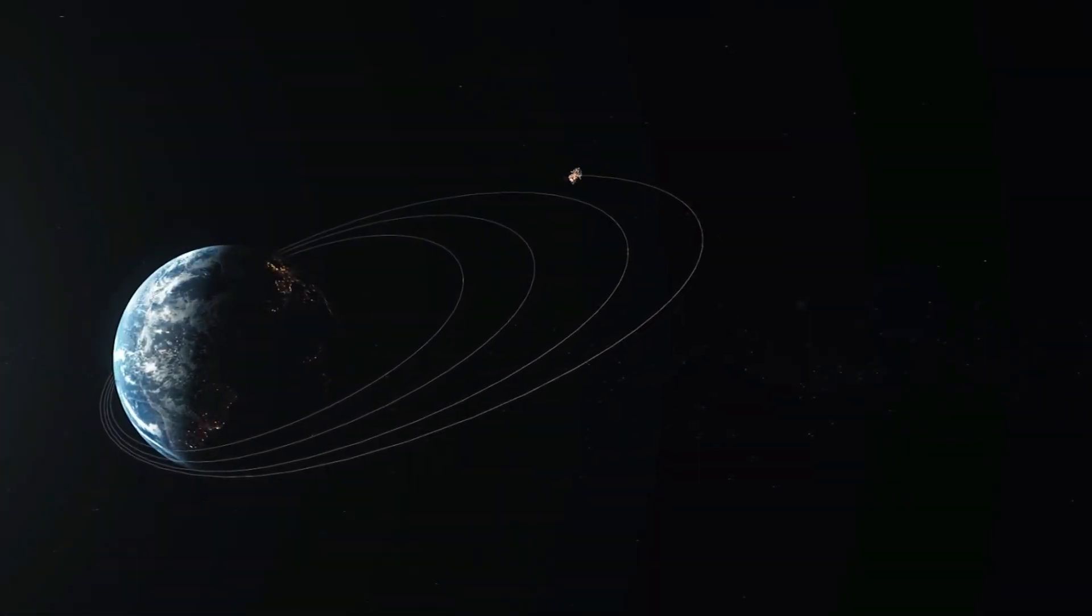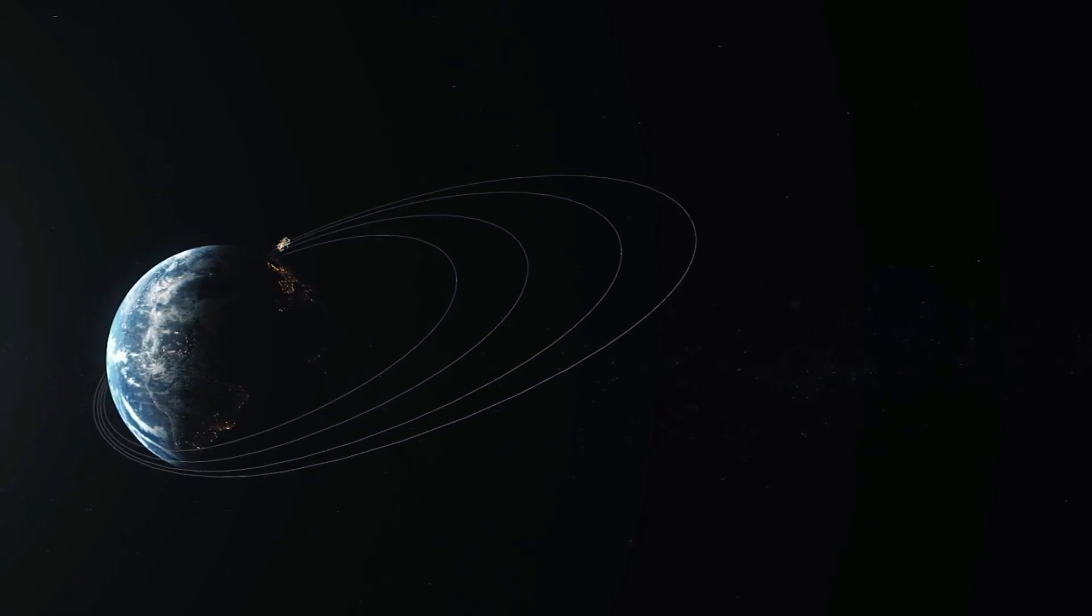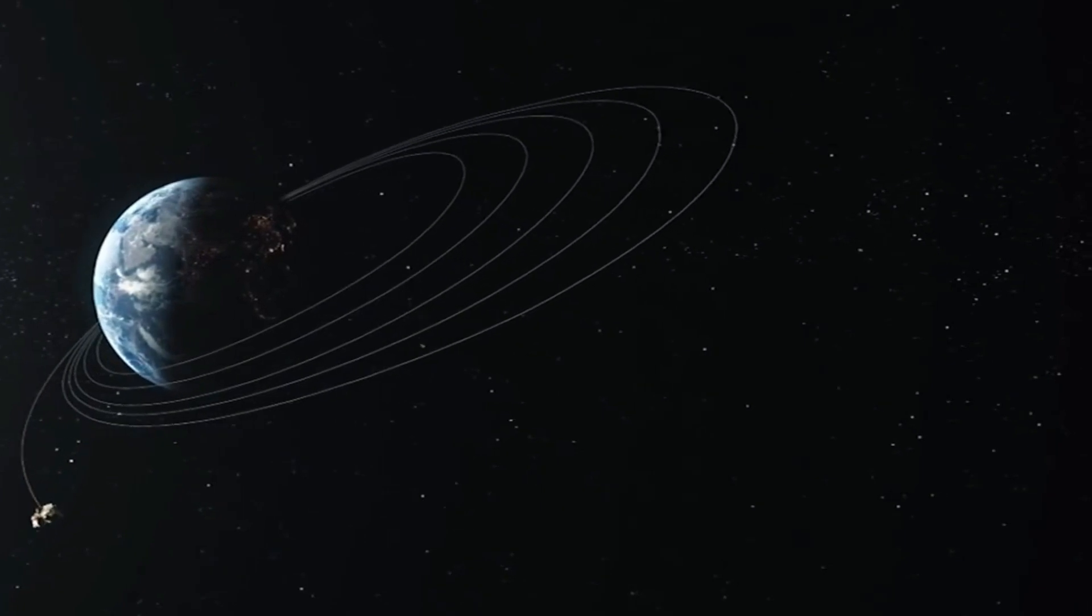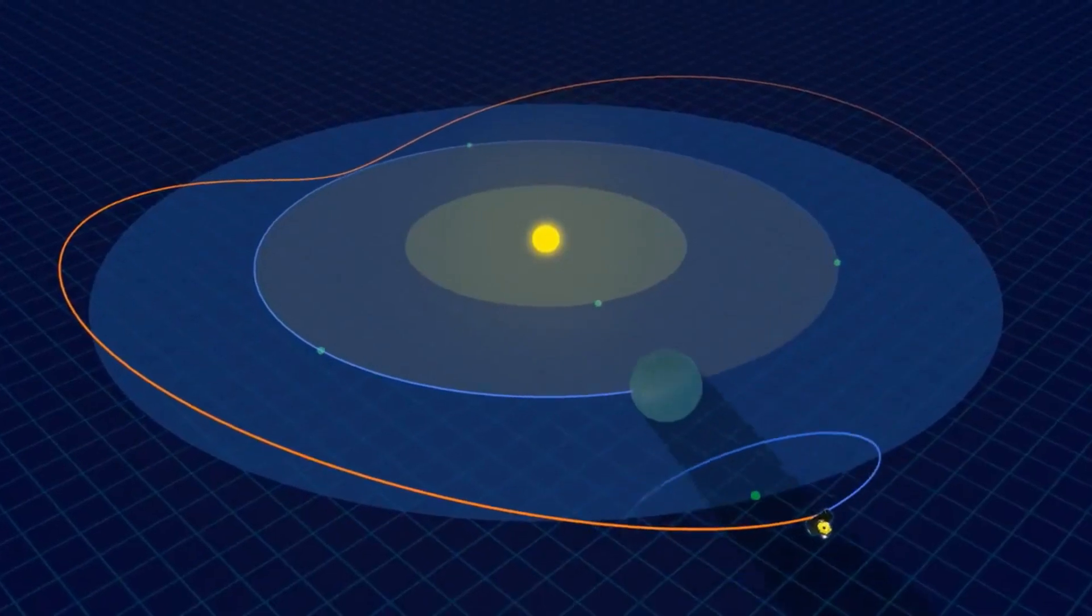Subsequently, the satellite's orbit will gradually transition into an elliptical shape. Then, utilizing the onboard thruster, the satellite will adjust its trajectory to enter the orbit around the L1 point of the Sun-Earth system.